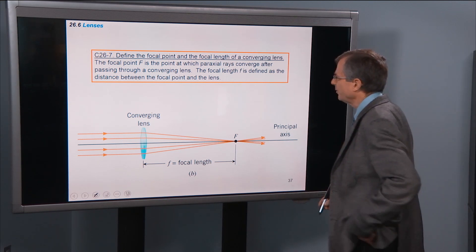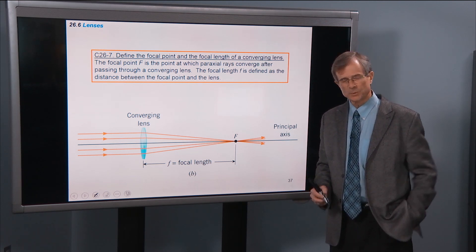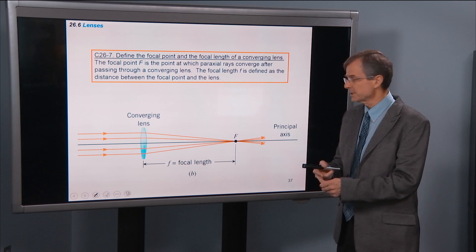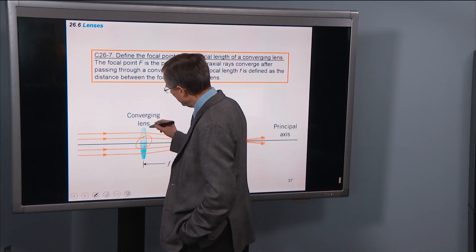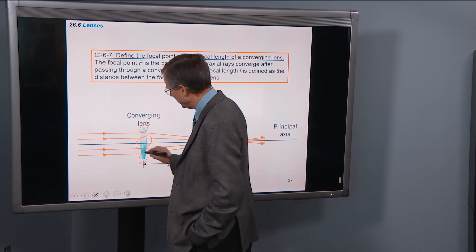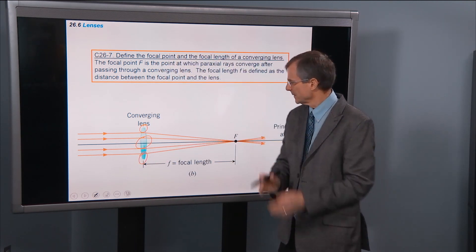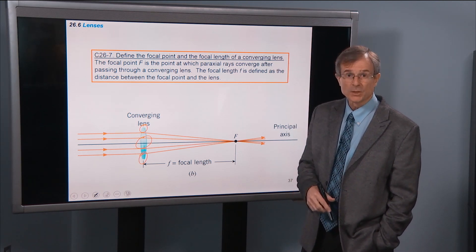First, define the focal point and the focal length of a converging lens. We'll talk about two kinds of lenses, converging and diverging. First, converging. Converging lenses are fatter in the middle and skinnier on the ends, shaped like this. Your eye, the lens in your eye is a converging lens.